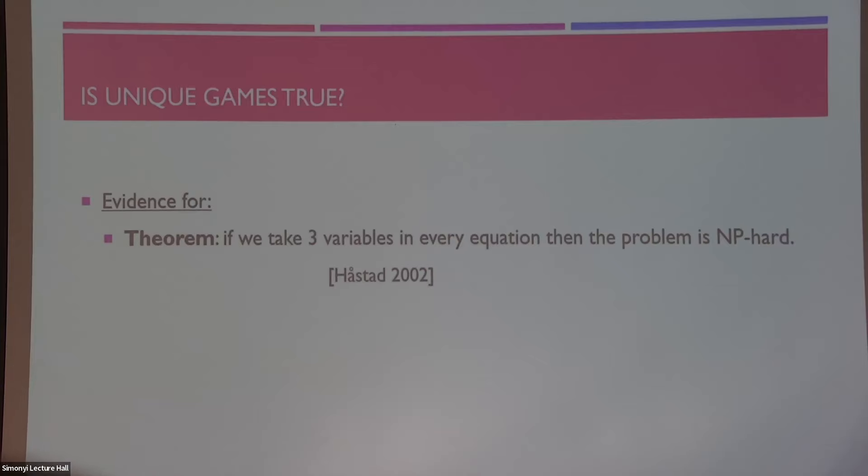So here's some evidence for this unique games conjecture. First of all, one might suspect that the fact that there is linear algebra involved may make this problem actually quite easy, because we're used to thinking of linear algebra as kind of simple computationally. But Håstad already tells us that if we take three variables instead of two variables in this problem, this problem is in fact NP-hard, so we do not expect efficient algorithms for it.